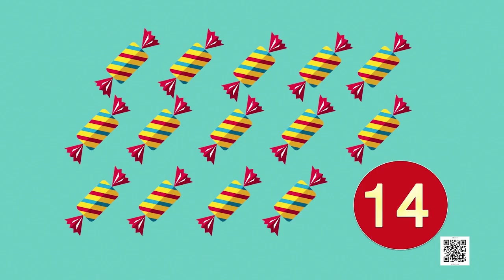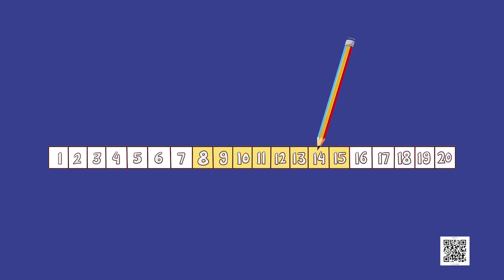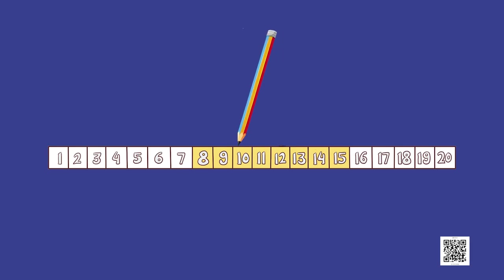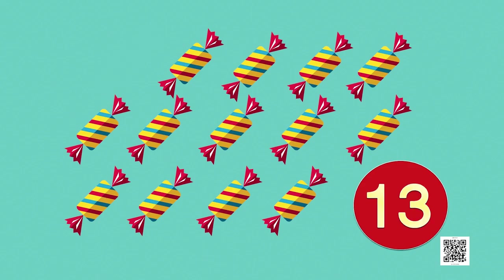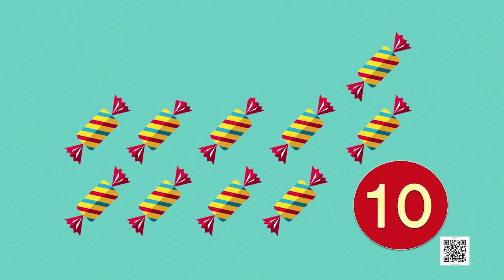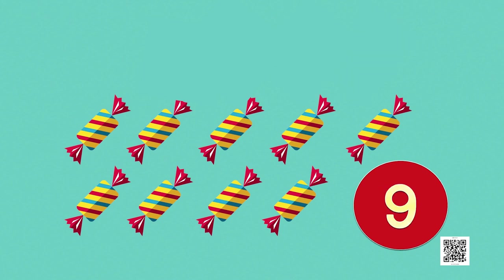Can we do it using backward counting? Let us try. From 14 we take 6 jumps backward, so we come to 13, 12, 11, 10, 9, 8. Correct! She shared 8 toffees with her friends.